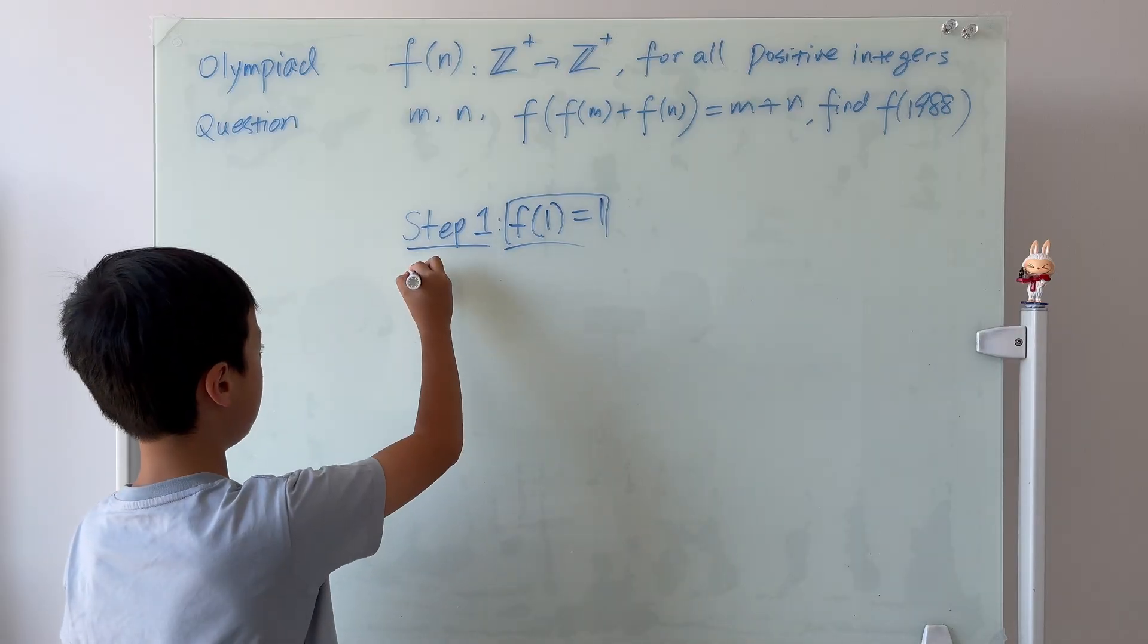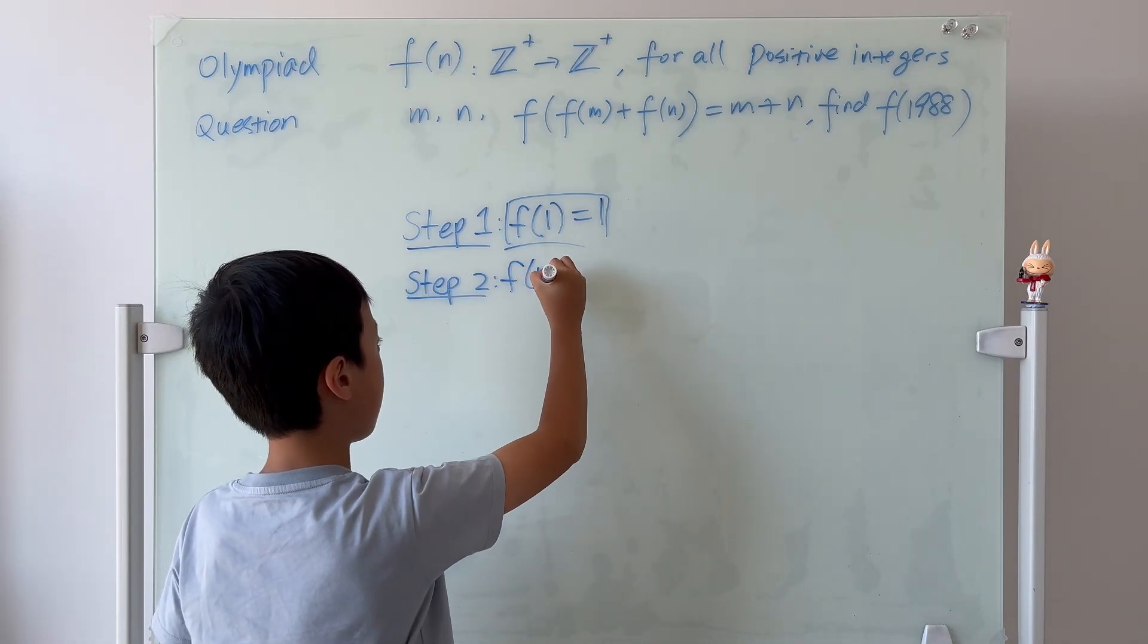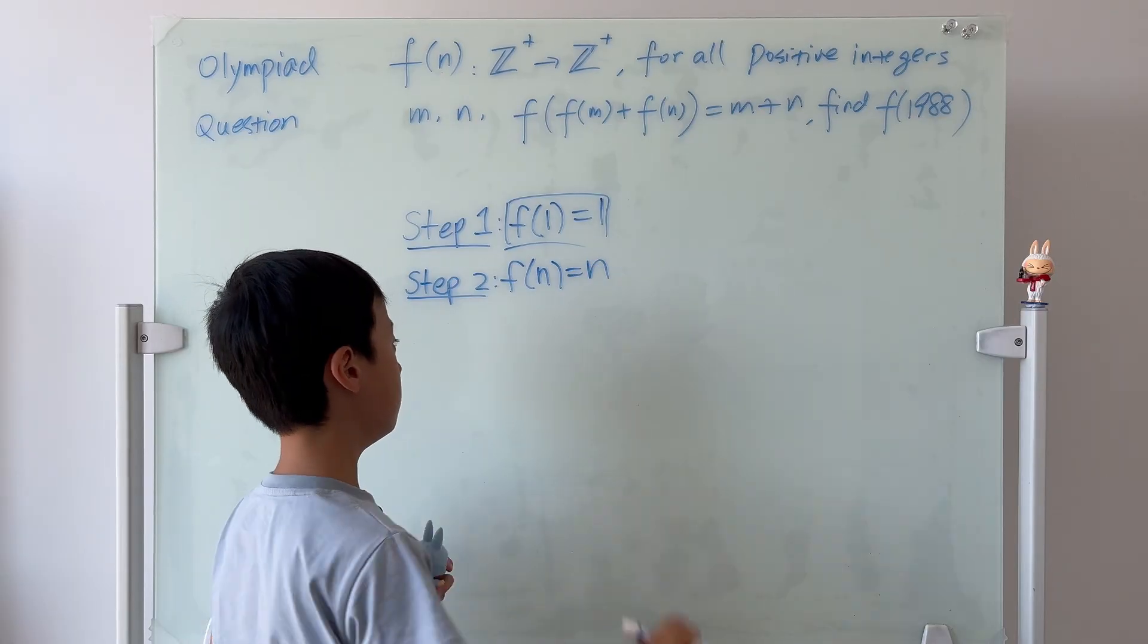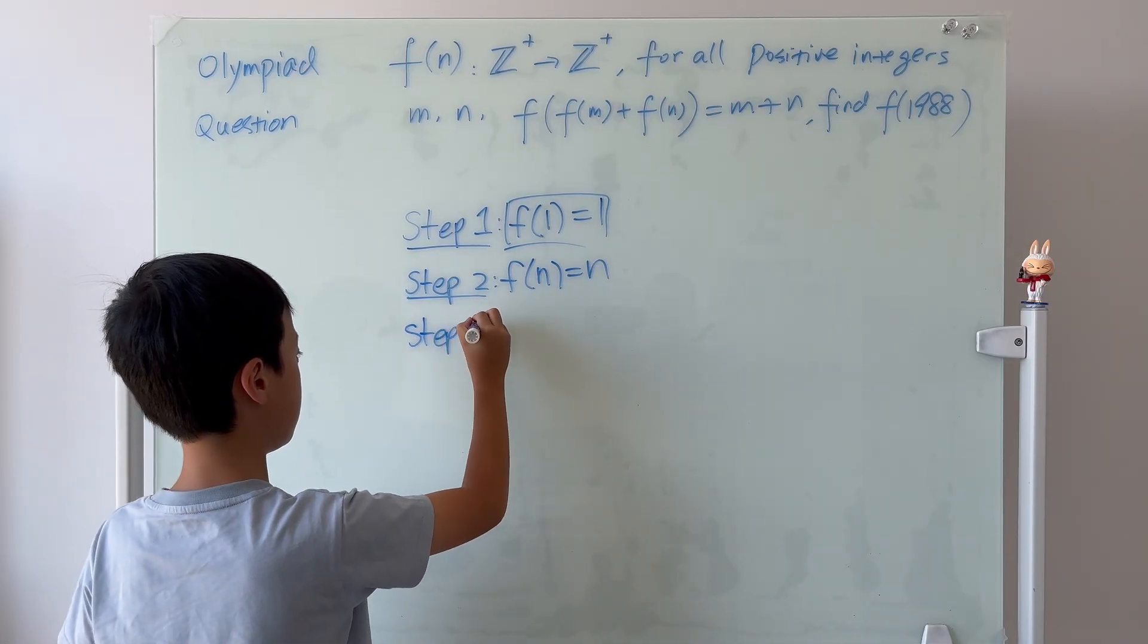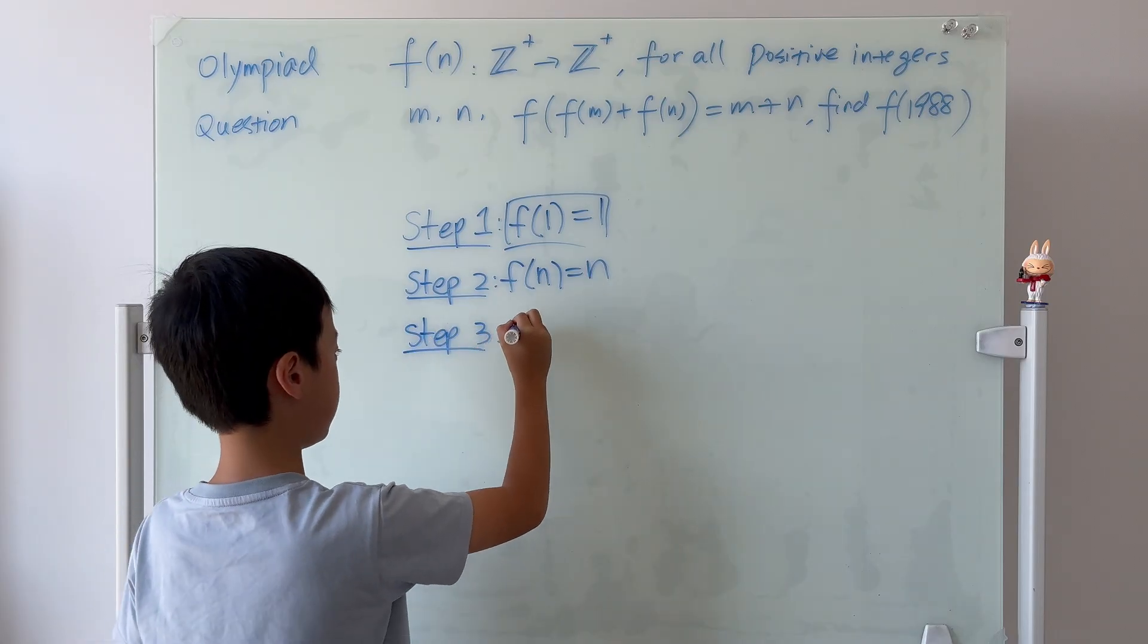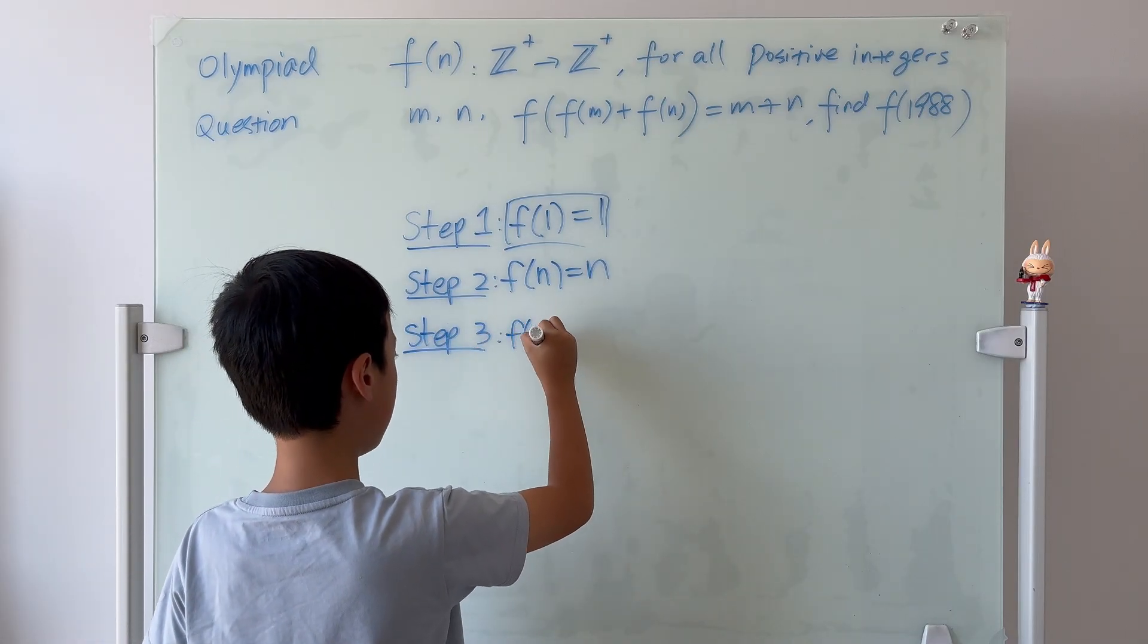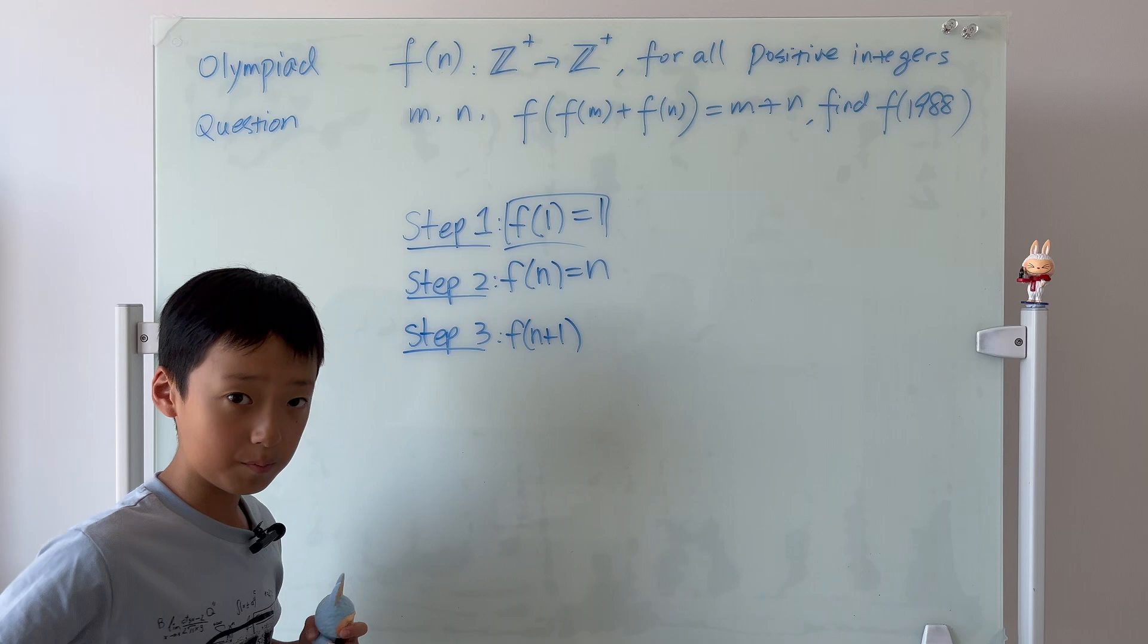Let's go to step 2. We just let a random variable n, we say it's true. And, then, the final step, step 3, is to prove that f of n plus 1 is equal to n plus 1.